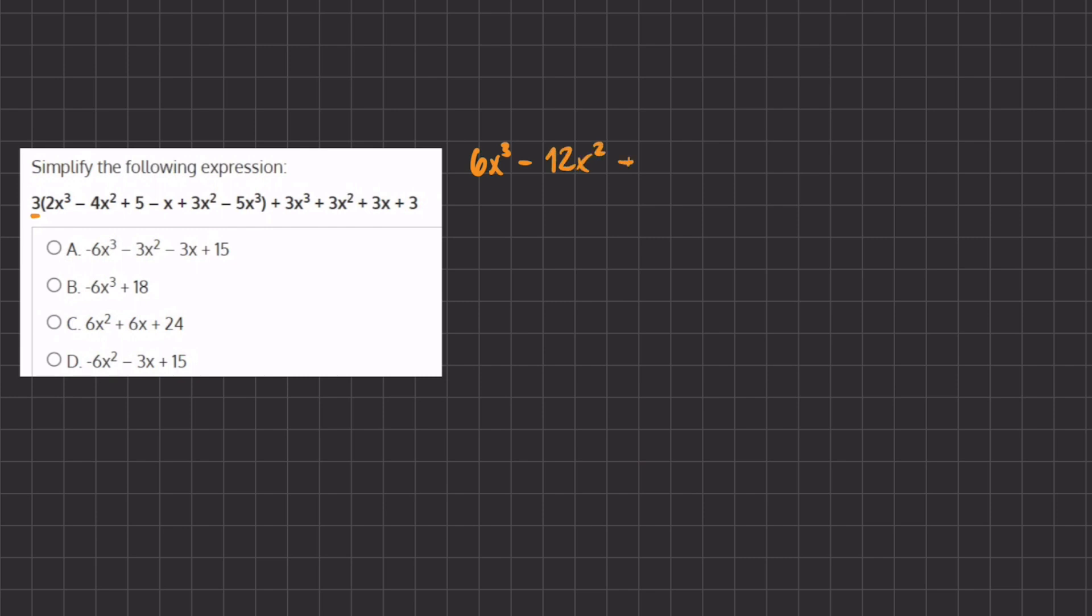3 times 5 gives us 15, 3 times negative 1x gives us negative 3x, and 3 times 3x² gives us a positive 9x², 3 times negative 5x³ gives us a negative 15x³.